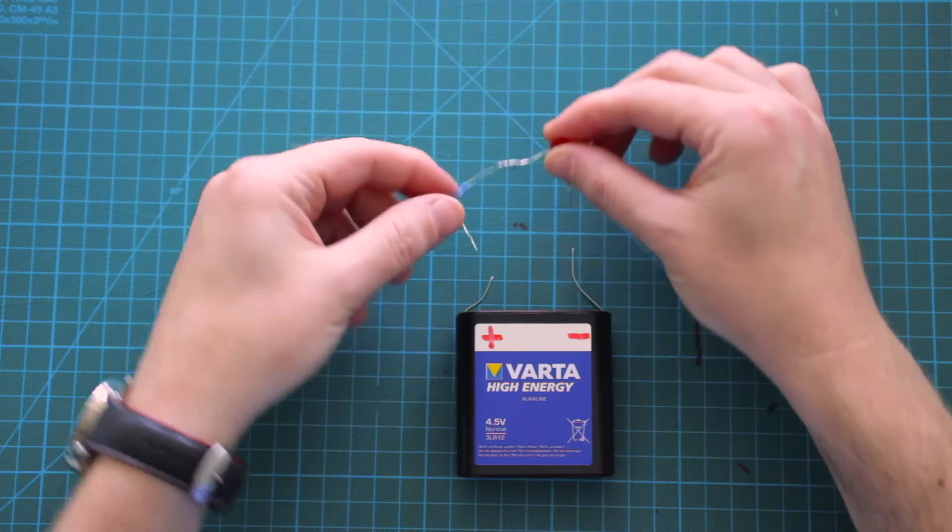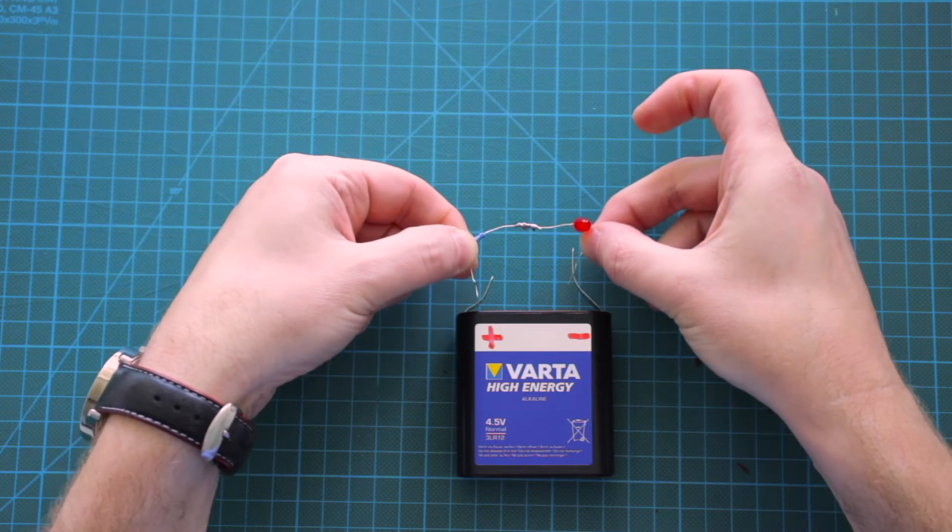and infinity when reverse biased. That is why when you want to connect an LED to a battery, it's better to connect it in series with a resistor.